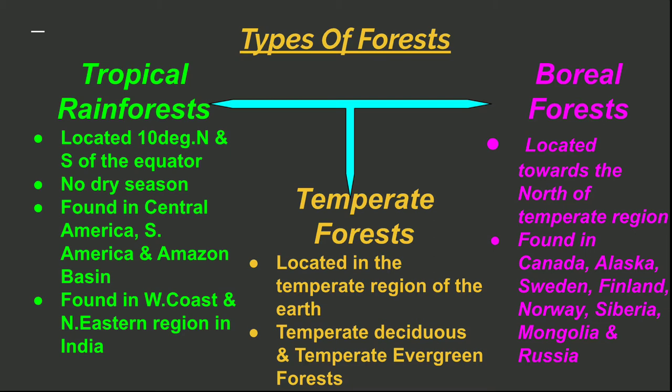Let me start with the tropical rainforest. This is located at 10 degrees north and south of the equator. There is no dry season. It is found in Central America, South America and the Amazon Basin. In India, it is found in the west coast and northeastern region.